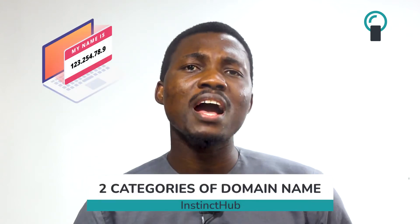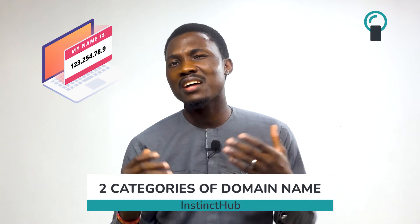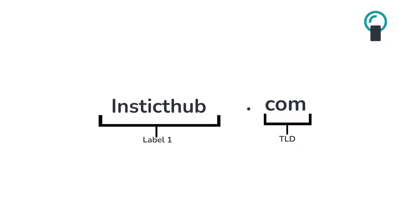Moving into it quickly, talking about domain, we have two categories of domain. But before I even talk about the two categories, let's understand what top-level domain is. Top-level domain is the suffix after every domain name. For instance, Instinct Hub is a domain name.